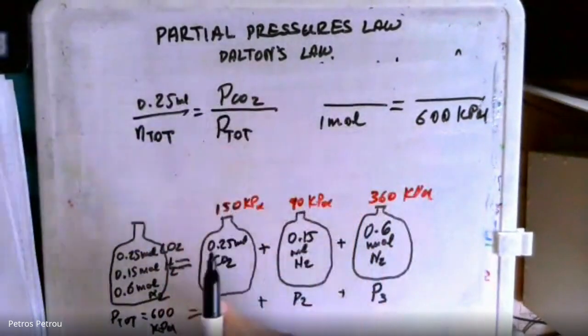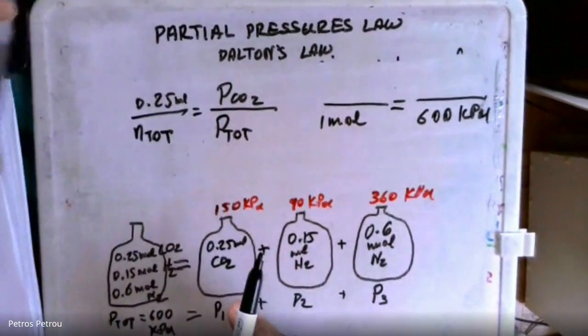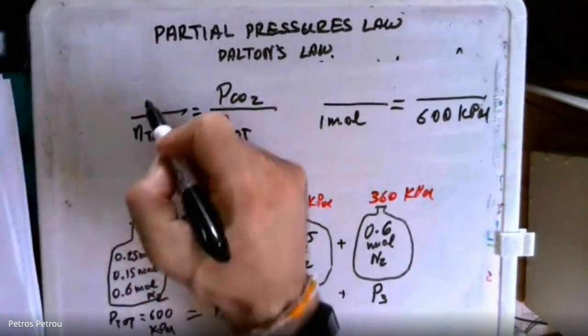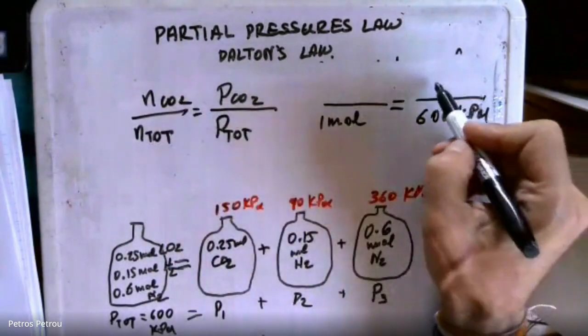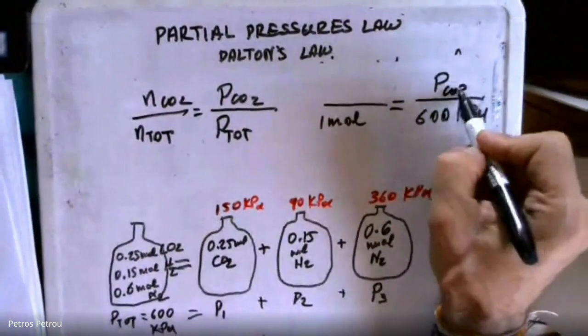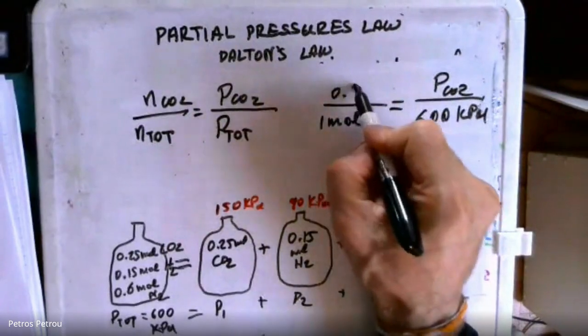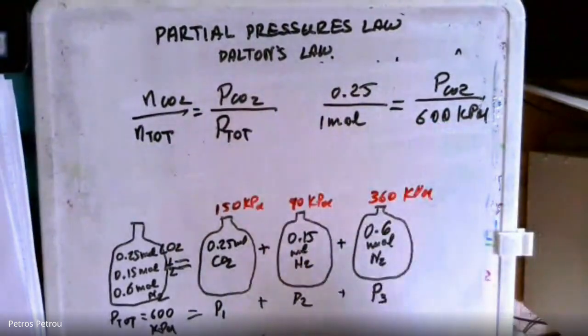So the number of moles, let me put the number of moles of CO2. Then I will put the value, N of the CO2. So here I have the pressure of the CO2 and the N of the CO2 is 0.25.